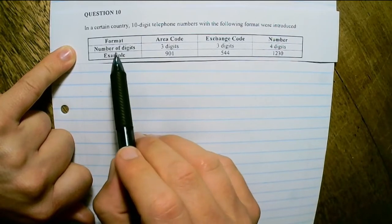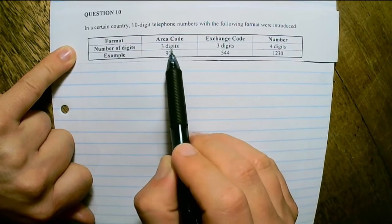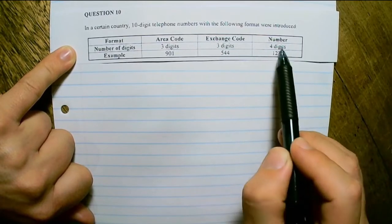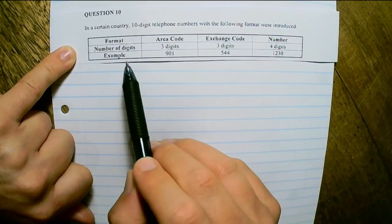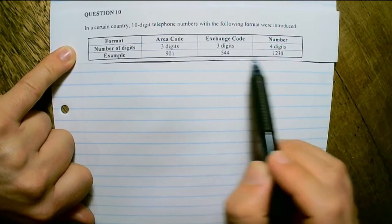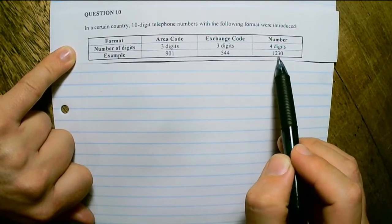The format is: the area code has 3 digits, the exchange code has 3 digits, and the number has 4 digits. For example, 9015441230.